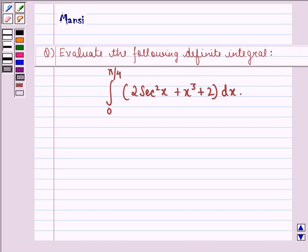Hello and welcome to the session. My name is Mansi and I am going to help you with the following question. The question says, evaluate the following definite integral: integral 2 secant square x plus x cube plus 2 dx, where lower limit of integration is 0 and upper limit of integration is pi by 4.